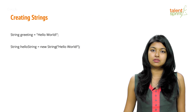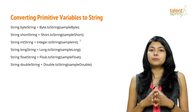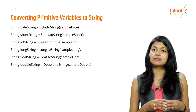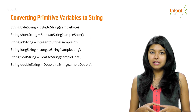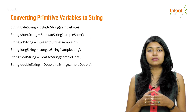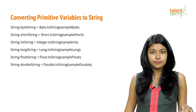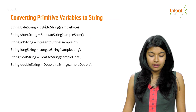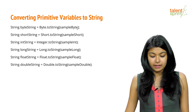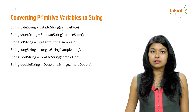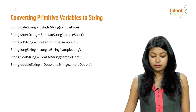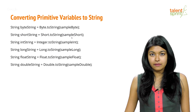All the primitive types in Java can be converted to strings using pre-existing functions of the wrapper classes. As shown on screen, you can convert byte, short, integer, long, float, and double to strings. For example, for byte: create a String variable 'byteString' and use 'Byte.toString(sampleByte)' — the byte value will be converted to a string. Similarly for short, use the Short wrapper class's toString function and give the short value.